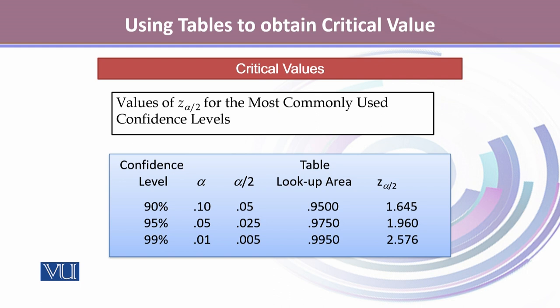When alpha is 0.05, then alpha by 2 will be 0.025 and the area that we will look for is 0.975. This corresponds to Z alpha by 2, that is 1.96.